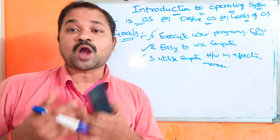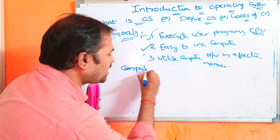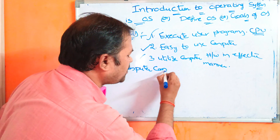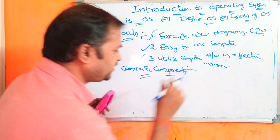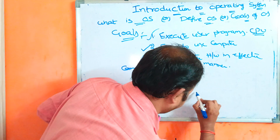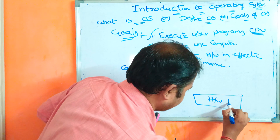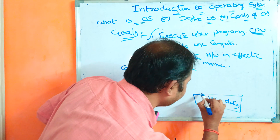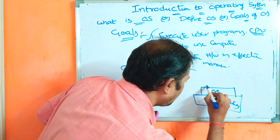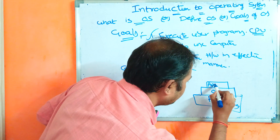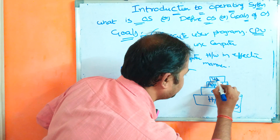Now let us see the components of a computer. A computer mainly contains four components. At the bottom we have hardware devices. On top of the hardware devices we have the operating system. On top of the operating system we have application software. On top of the application software we have users.